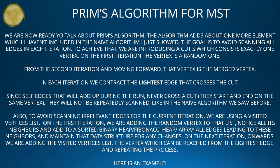Also, to avoid scanning irrelevant edges in the current iteration, we use a visited vertices list. On the first iteration, we add the random starting vertex to that list, notice all its neighbors, and add to a sorted data structure — such as a binary heap or Fibonacci heap — all edges leading to these neighbors, maintaining that data structure for any changes. On the next iteration onwards, we add to the visited vertices list the vertex reachable from the lightest edge, and repeat the process.